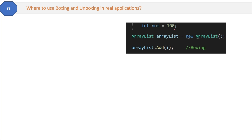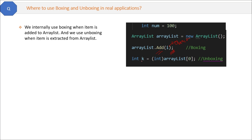Where to use boxing and unboxing in real applications? Here we create an ArrayList and add an integer into it. The ArrayList does not store integers — it stores objects only, so internally the integer is first converted to an object and then added. That is boxing. When extracting items from the ArrayList, we have to do unboxing to convert the object back to an integer.